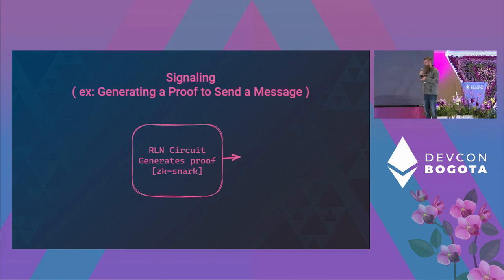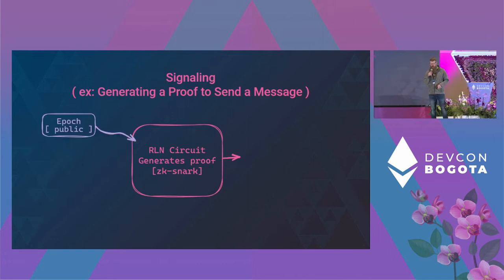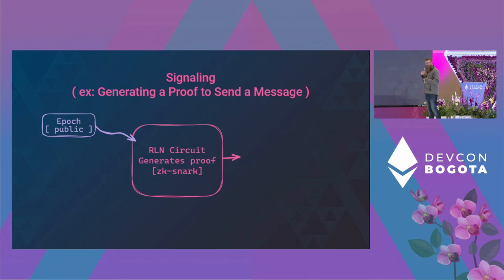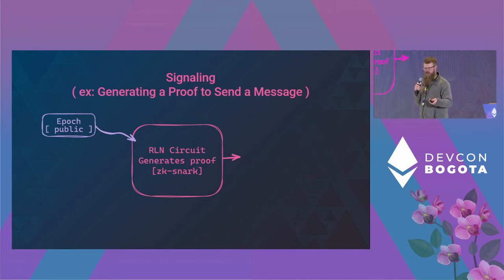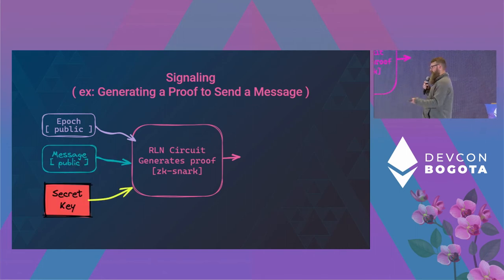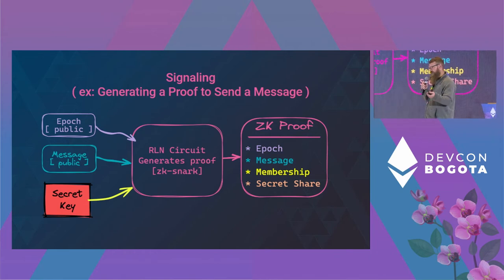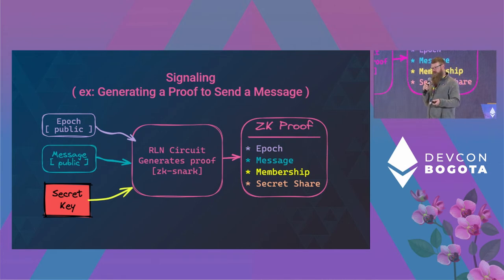The signaling part is kind of the meat of all of this. It's a Circom circuit, and the first public input is the epoch — which is like a time, or it could be like a post on Reddit — just some delineation in time or an event. Then the actual message, and then a secret key. Out of that comes a proof that your epoch and your message are accurate and verified with what you put in. It proves that you belong to that Merkle tree membership group, and it spits out a secret share.